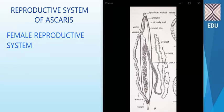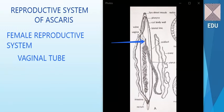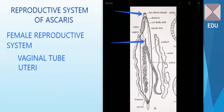Starting with the vaginal tube — the first part we describe here — you can see it opens out as the female gonopore, which is located behind the mouth near the middle of the body. This is the female gonopore into which the vaginal tube descends. This tube then divides into two uteri. Uteri is the plural of uterus, so we have two uteri here.